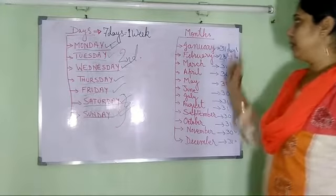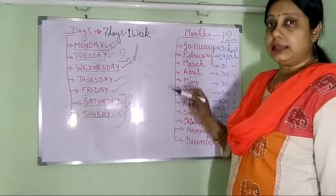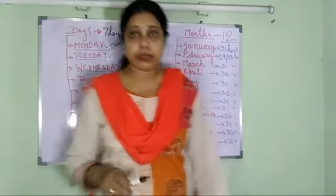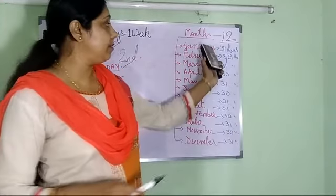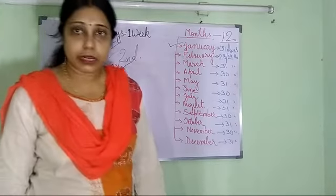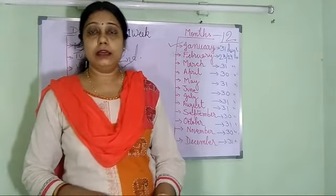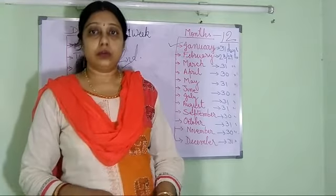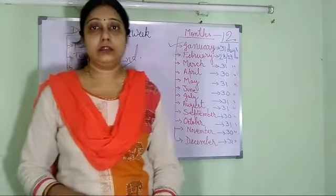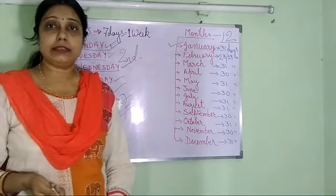Now come the months. How many months are there in a year? There are 12 months in a year. Let us revise one by one: January, February, March, April, May, June, July, August, September, October, November and December. These are the 12 months of a year. 12 months make one year.